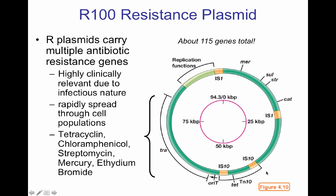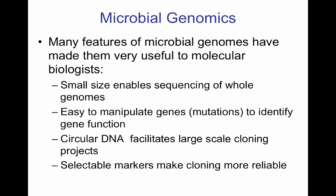To finalize, microbial genomes have many features useful for molecular biologists. Their small size allows easy sequencing to understand gene organization and use them for cloning. They can be manipulated through mutations to identify gene function. Because of their circular nature and replication mechanism, they are easily scalable for cloning projects. Since they can contain antibiotic resistances, selective markers allow easy selection of clones. With that, I'll conclude the lecture, and I will be ready for a quiz for you students on Tuesday.